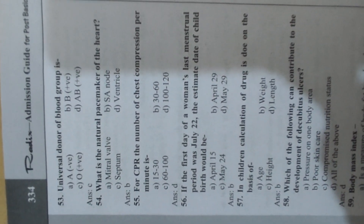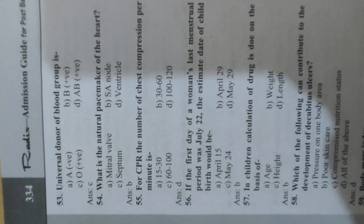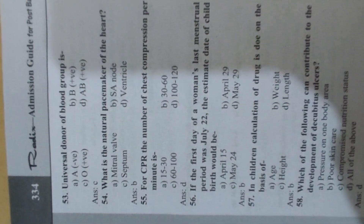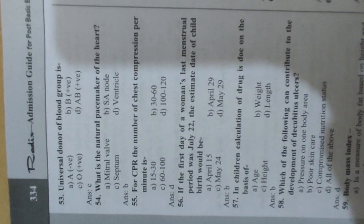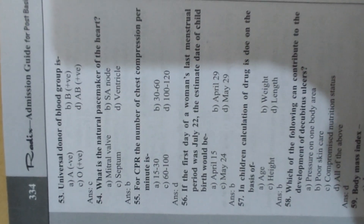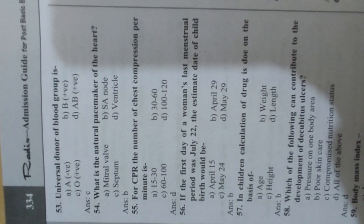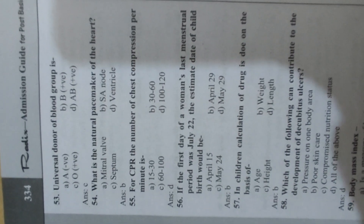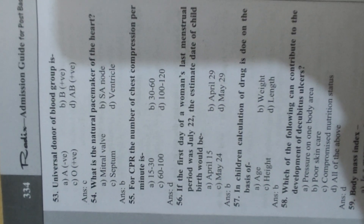Question 51: Which of the following condition needs to be treated immediately? Answer D, excessive continuous bleeding. Question 52: Which four areas of the body can you use to obtain body temperature? Answer A, oral, rectal, axilla, ear canal. Question 53: Universal donor blood group is Answer C, O positive. Question 54: What is the natural pacemaker of the heart? Answer B, SA node. Question 55: For CPR, the number of chest compressions per minute is D, 120.